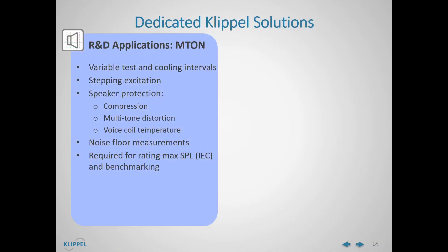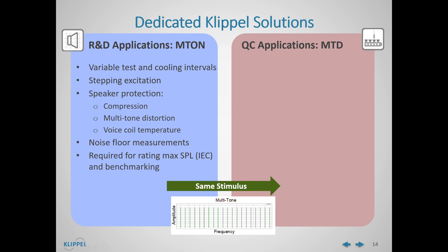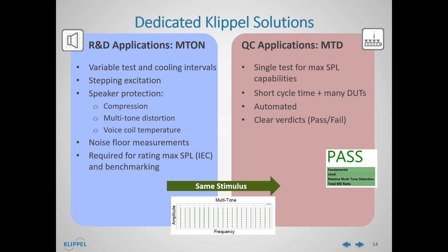In addition to the M-tone measurement module, Clipper offers a different module for QC applications: the MTD or multi-tone distortion task. Both measurement modules share the same stimulus, which gives us the possibility to transfer the same multi-tone stimulus and therefore verify the SPLMAX of our last measurement in our production. The MTD is implemented in the QC system, which is specially designed to perform an efficient end-of-line testing. We can verify the max SPL capabilities of our production by doing a single test. It is optimized to perform the measurement in the minimal time possible, so many DUTs can be tested in a short period. It can be integrated in an automated production, shows clear verdicts after every single measurement, the measurement data is reduced making results storage easier, and it is simple and easily traceable.